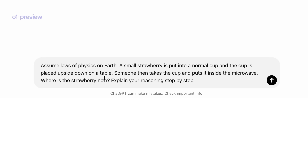The problem reads: assuming the laws of physics on Earth, a small strawberry is put in a normal cup, and the cup is placed upside down on a table. Someone then takes the cup and puts it inside the microwave. Where is the strawberry, and what is the reasoning behind it?